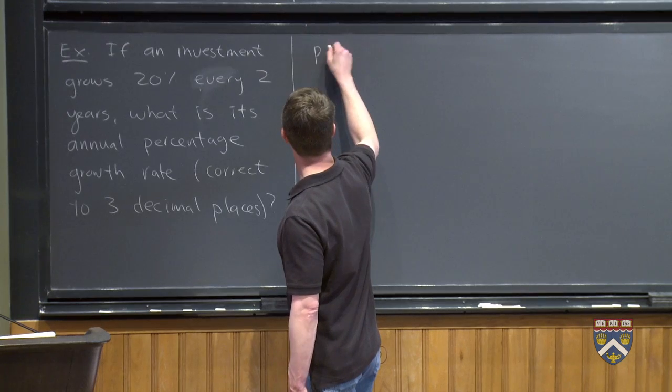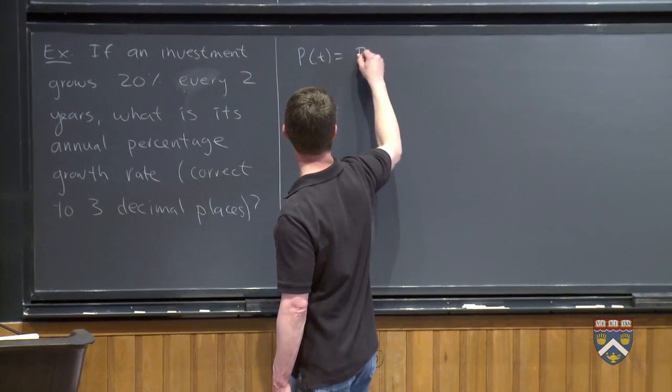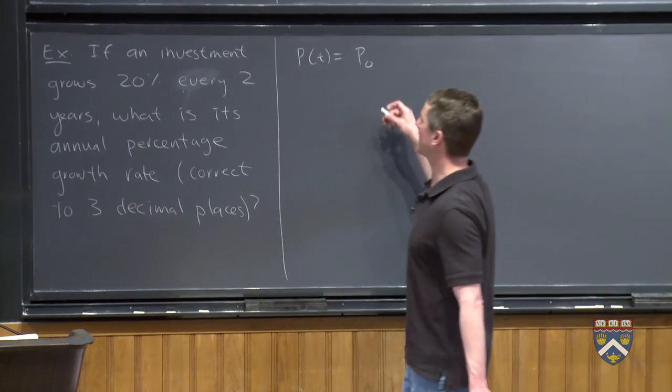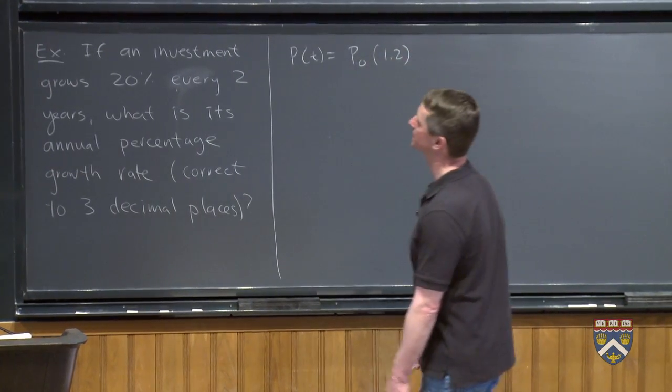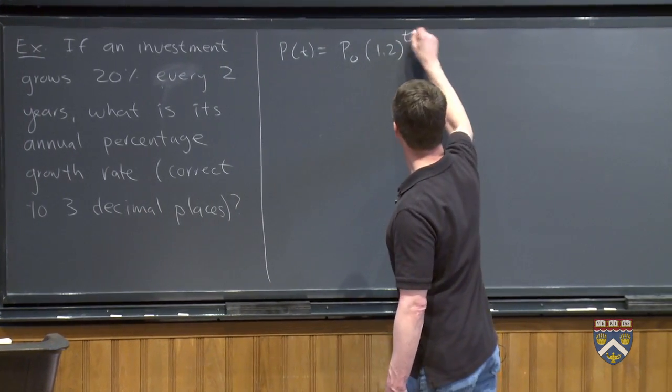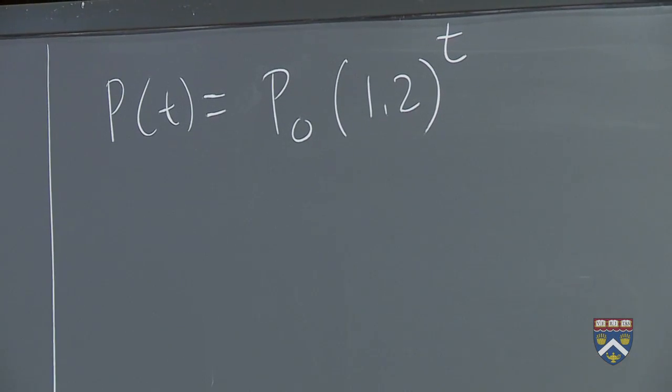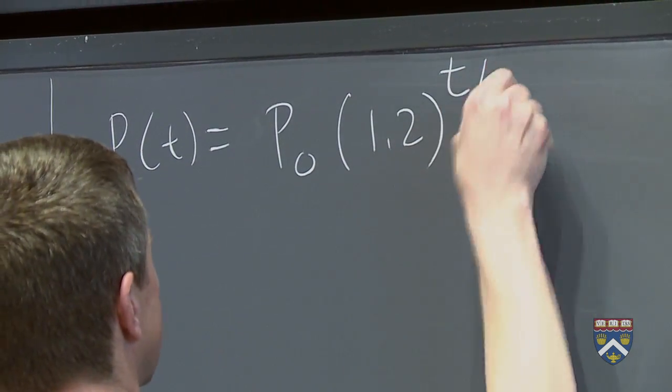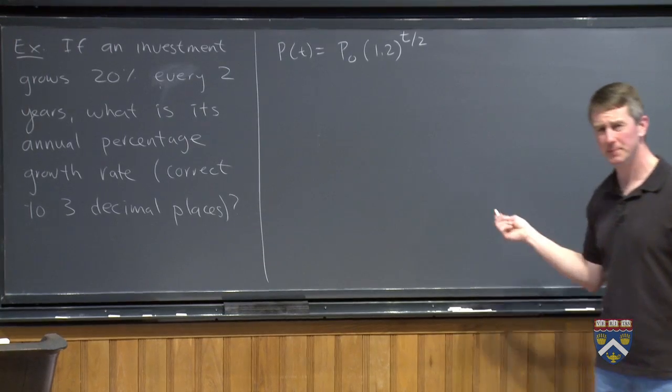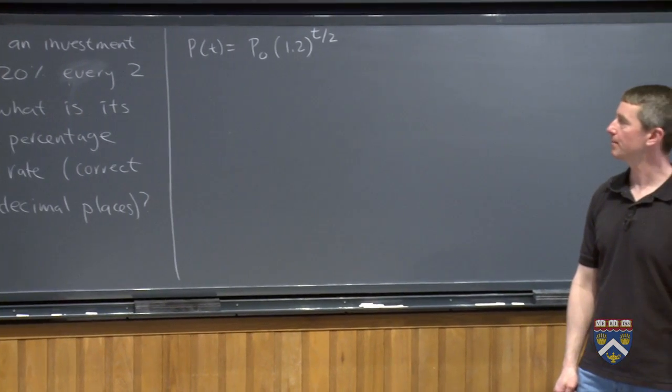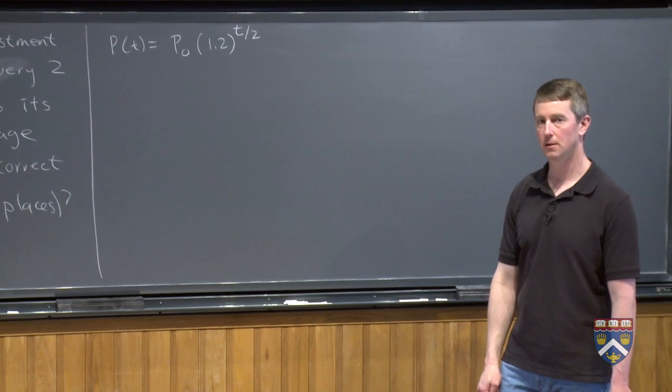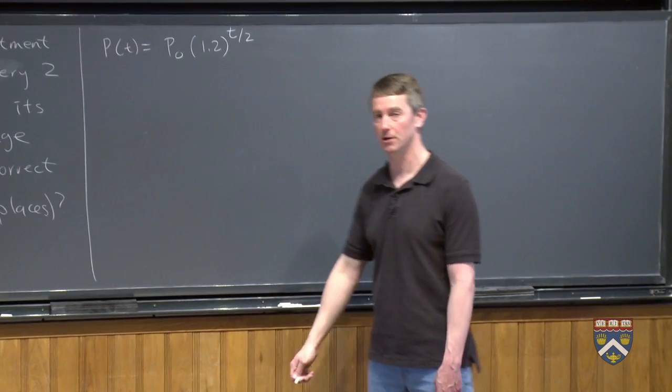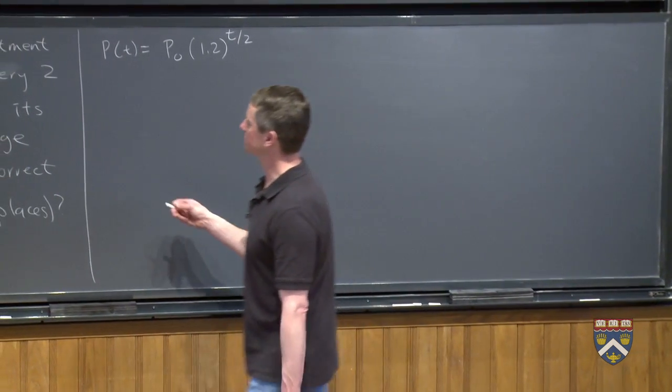So what do we need first? We need a formula. So P(t), it's an exponential growth because we're growing at a constant percentage rate, P naught times 1.2, we're growing 20%. If we put a T up there, that's too fast, just like the example we just did. This is growing 20% every year. We want to slow it down to be T over 2. Do we know what P sub 0 is? Do we know the amount that we have at time 0? We don't, but we don't need to. So if you want, you could put in your favorite number for P sub 0, as long as it's not 0. But it doesn't matter, as we'll see.